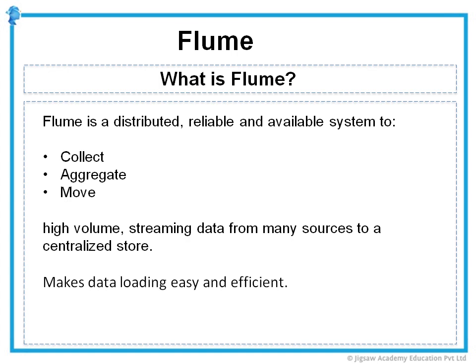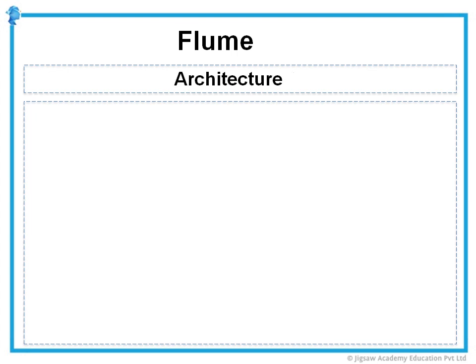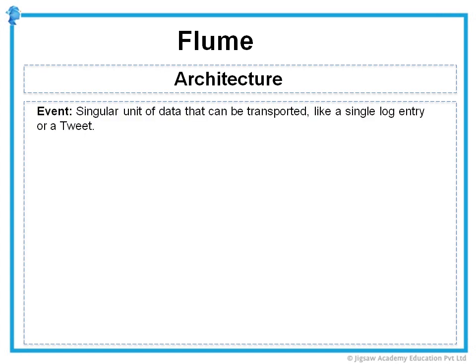We will be using Flume NG to explain the same, where NG stands for new generation and is the work related to the new major revision of Flume. The architecture of Flume is based on a few core concepts. The first is Event — an event represents a singular unit of data that can be transported by Flume from its point of origin to its final destination. Examples of an event can be a single log entry or maybe a tweet.